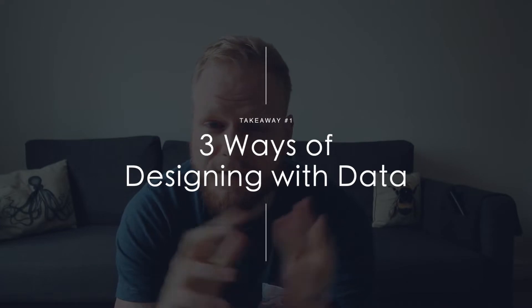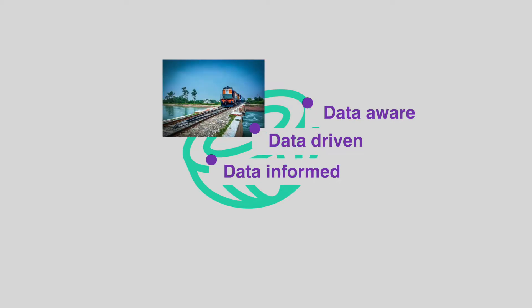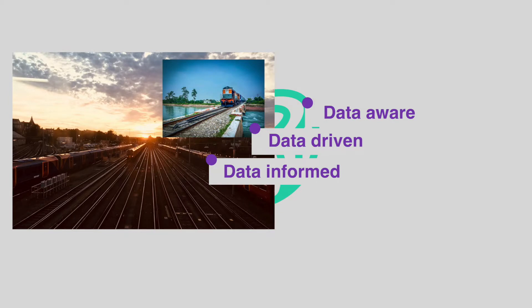Number one: there are three different types of working with data. The book lists three things — data-driven design, data-informed design, and data-aware design. You can imagine them like an onion, where one thing builds on top of the other. Data-driven design is the core — like a train going one direction, very specific, and you know exactly what you're going to get out of it. The second layer is data-informed design.